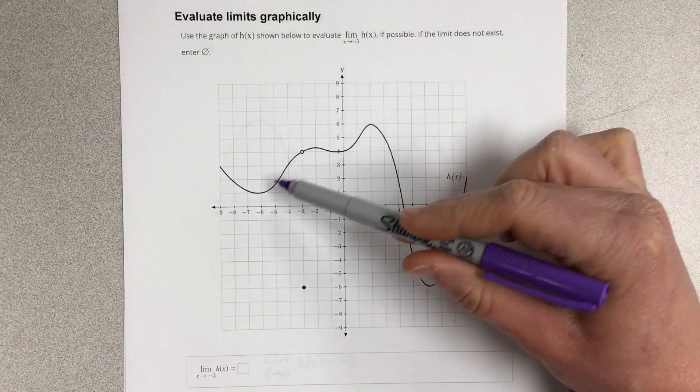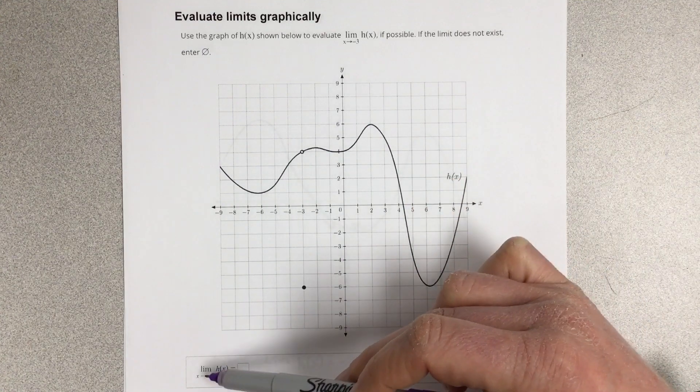And they give us this function h of x. And they want us to find the limit as x approaches negative 3.